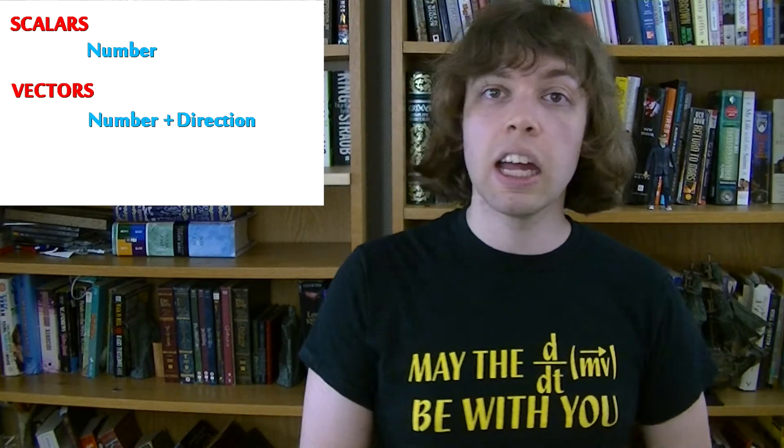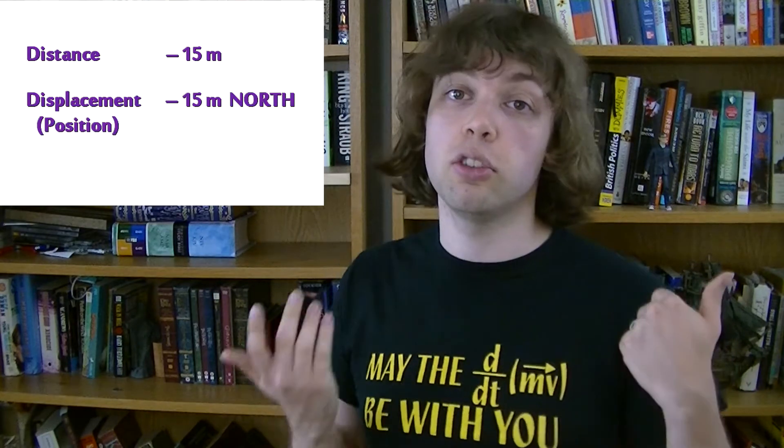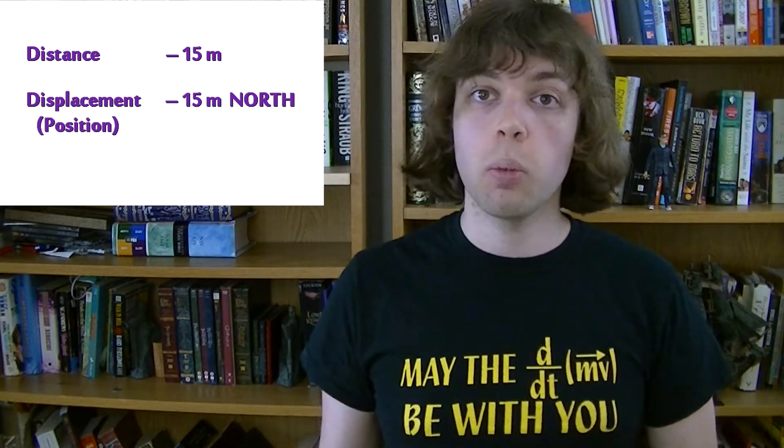So what is a vector? A vector has both a number and a direction. So instead of saying you traveled a distance of 15 meters, you might say you went 15 meters north. By adding the north part, you're making it a vector — you're giving it a direction.